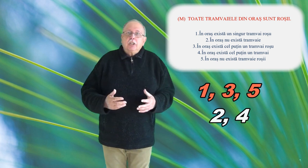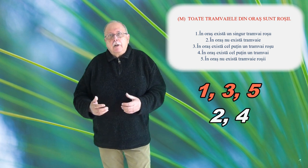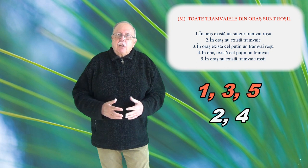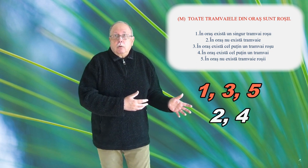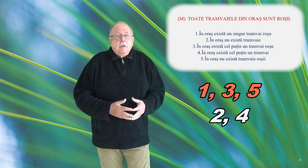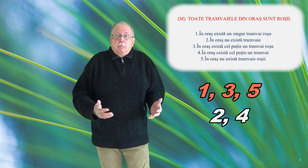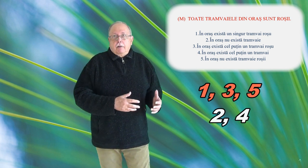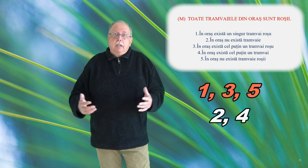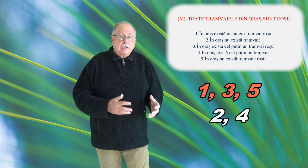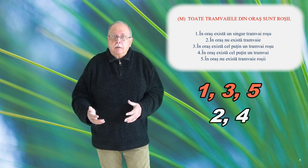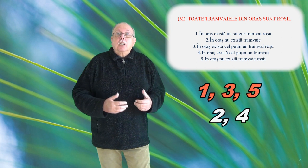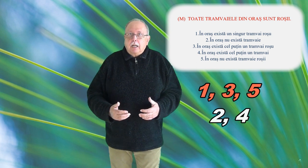Să începem cu prima categorie și să analizăm pe rând informațiile. 1. În oraș există un singur tramvai roșu. Ne putem imagina situații în care, deși știm că M este o minciună, afirmația 1 despre care vorbim nu este adevărată. De pildă, poate că în oraș există 5 tramvaie roșii și 10 tramvaie verzi. Și în acest caz M este o minciună, deși în oraș există mai multe tramvaie roșii, nu unul singur. Deci 1 nu este cu siguranță adevărată.